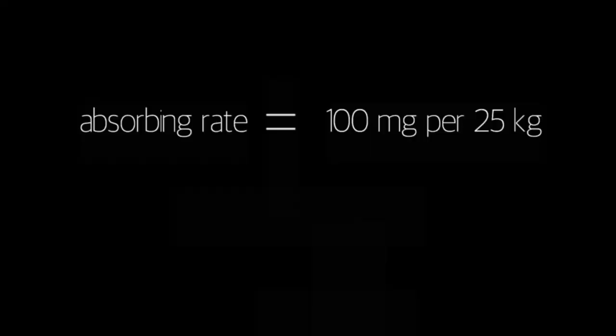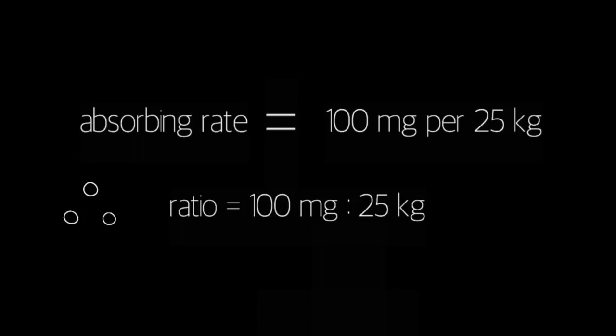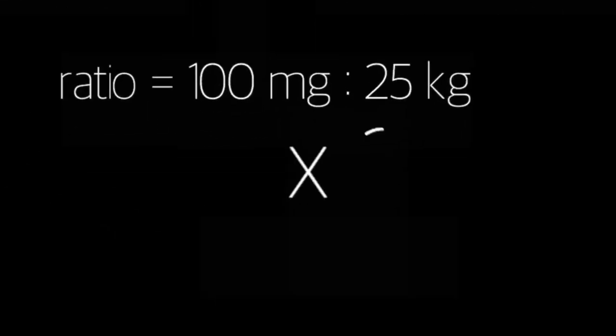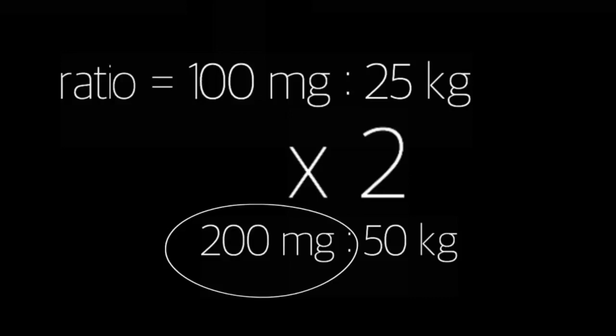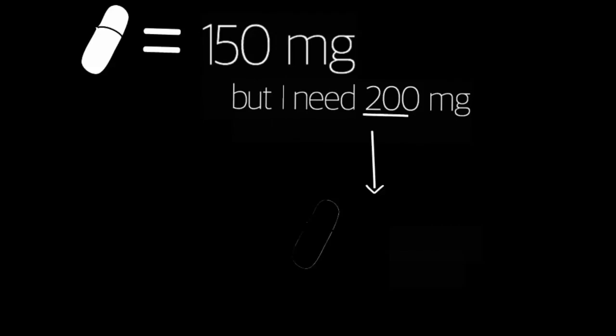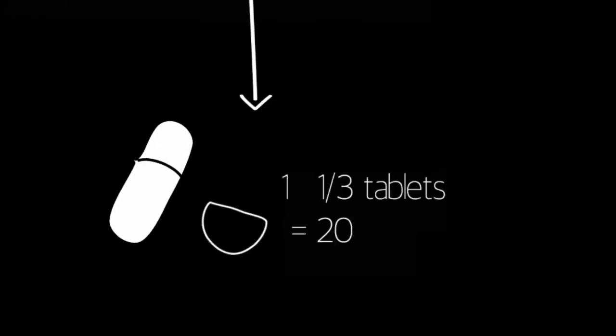Then by using ratios, I can work out how much medicine to give this person. The ratio is 100 milligrams of medicine to 25 kilograms of body weight. I now just need to scale this up to 50 kilograms. I do this by multiplying both sides of the ratio by two. This keeps my numbers in the same proportion and I now know that I need to give 200 milligrams of the medicine for it to be fully absorbed into this person's body. Because each tablet contains 150 milligrams, I would give out one and a third of the tablets.